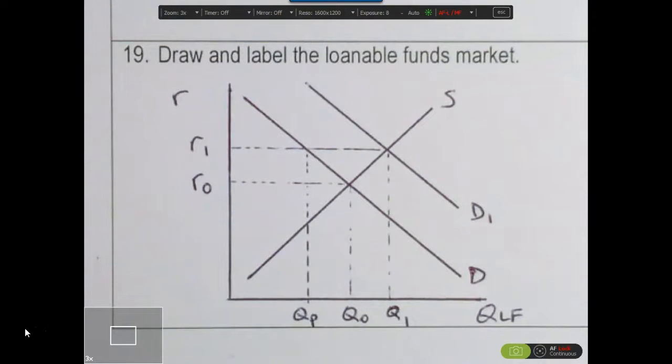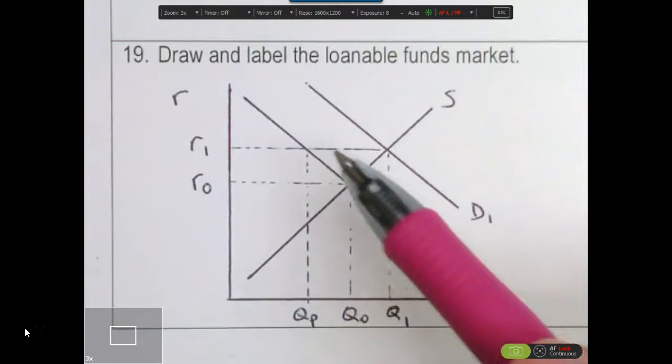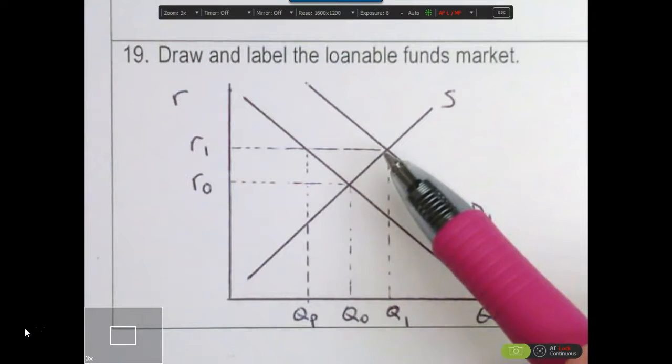Another way of looking at it is to say that, again, this increase in demand is caused by government borrowing. And the amount of government borrowing is the horizontal distance from the original demand curve to the new demand curve.